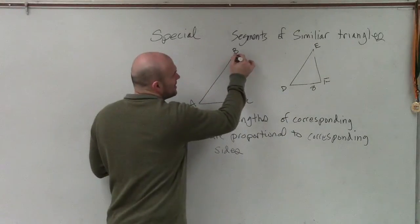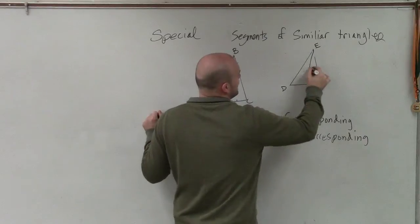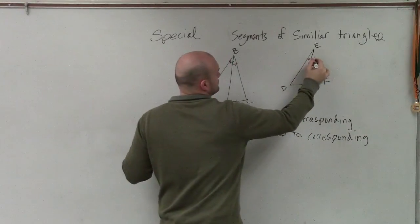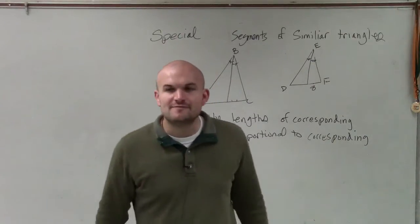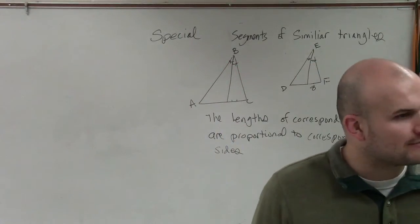So now the next one I want to talk about is what we call angle bisectors, OK? So if you have an angle bisector, that means the line that cuts an angle in half, right?